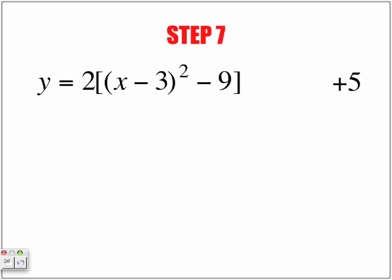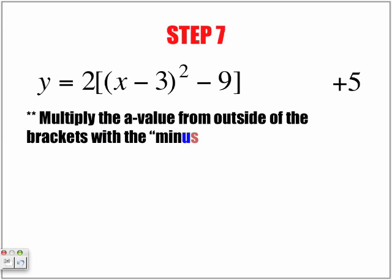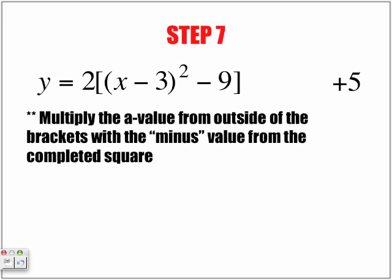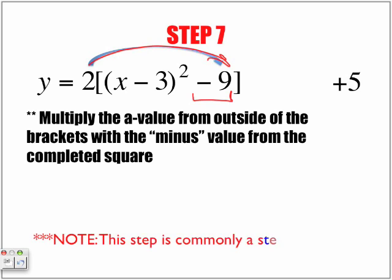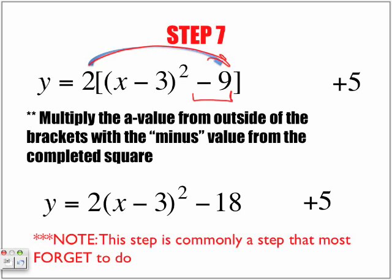Step seven. Just as we did, we've factored our perfect square trinomial, and this is one of the most commonly mistaken places that students forget to do: multiply the a value from outside of the brackets with the minus value from the completed square. The two — before we can continue with the rest of this equation — this negative nine must be multiplied by the two. This is a common step that most forget to do. We get: y is equal to two times x minus three squared, minus eighteen, plus five.